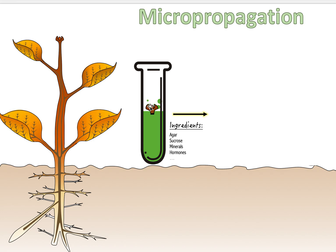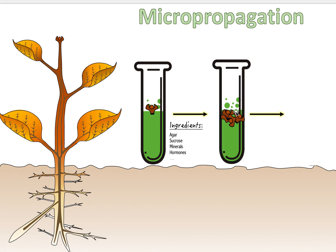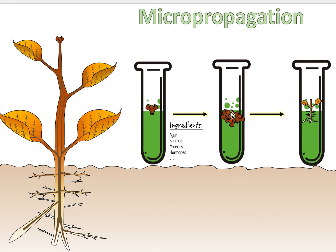This test tube has all the right ingredients: agar, which is a gel containing sucrose for energy, minerals for growth functions, and hormones. If we have all these ingredients and put our apical meristem in and give it some time, the apical meristem will start growing and form a cluster — a growth that has the ability to become a plant.